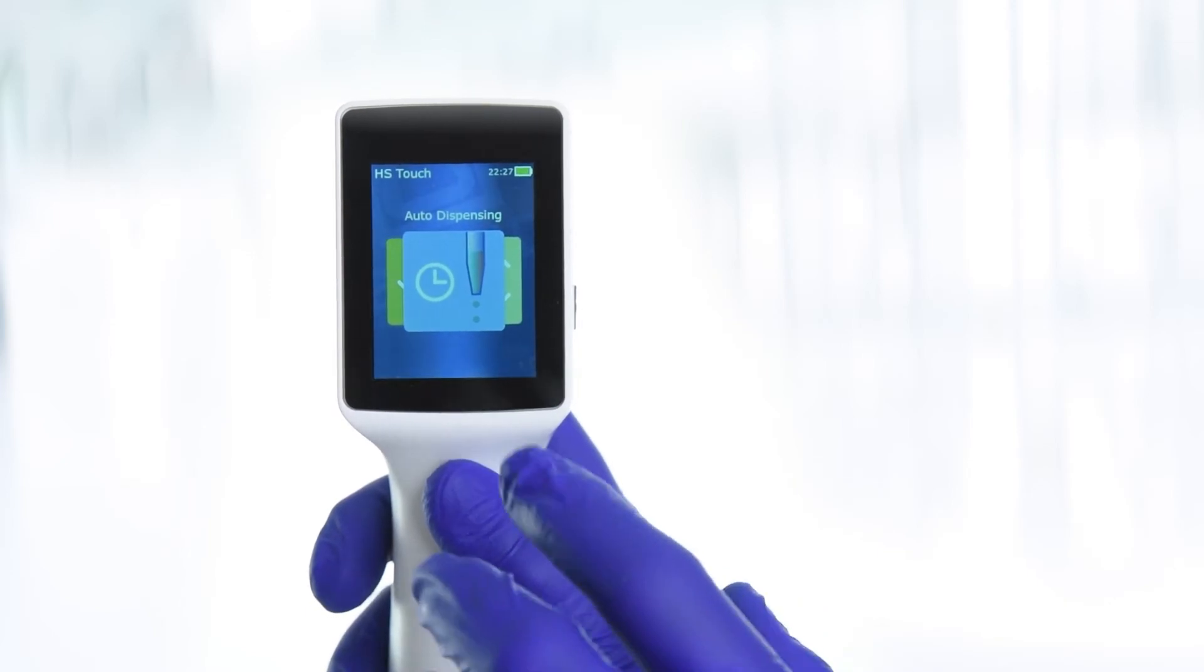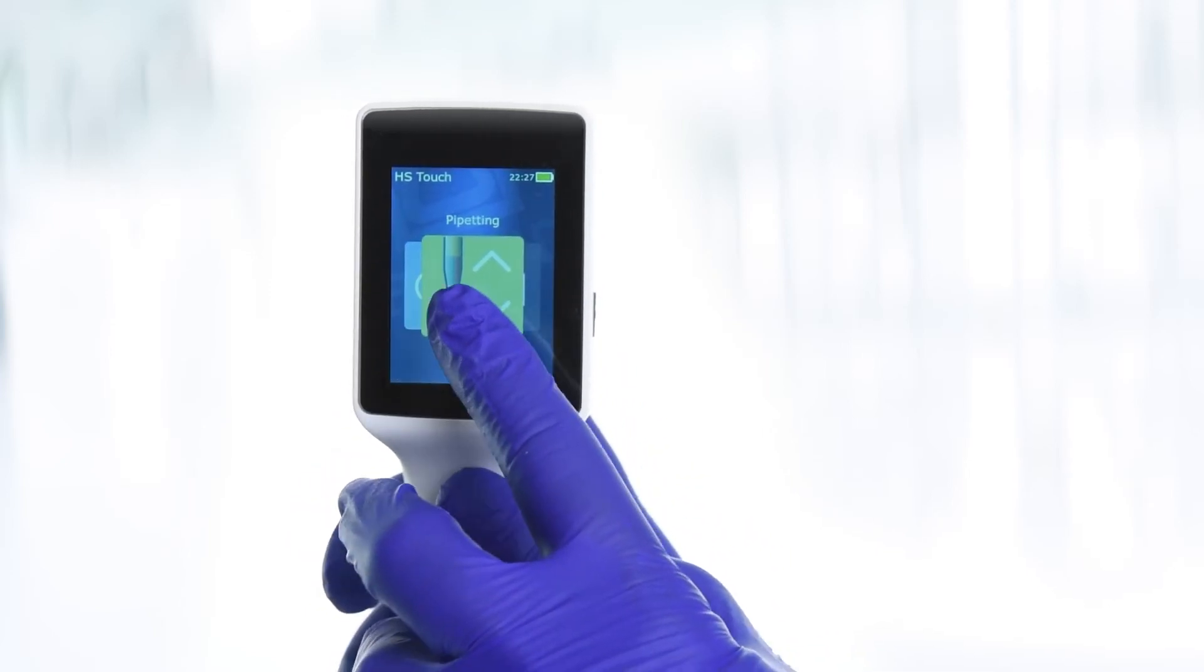Swipe left or right until the Pipetting Mode is displayed. Then tap to confirm.